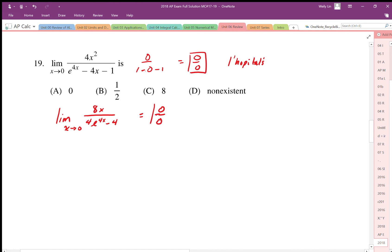Applying L'Hôpital's a second time, we end up with eight over four e to the power of four x, and then times by four again because of the chain rule. We end up with this expression, the minus four differentiates to zero.